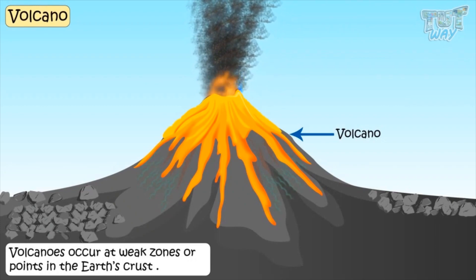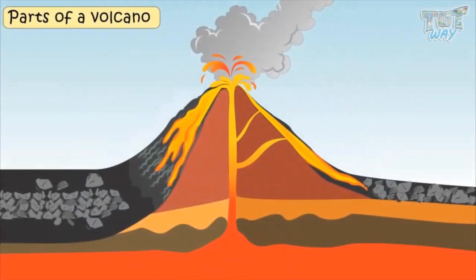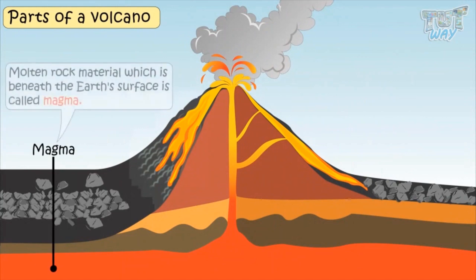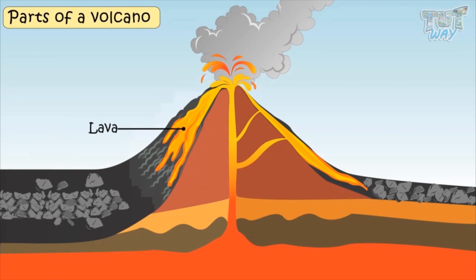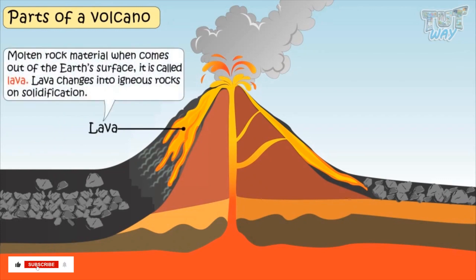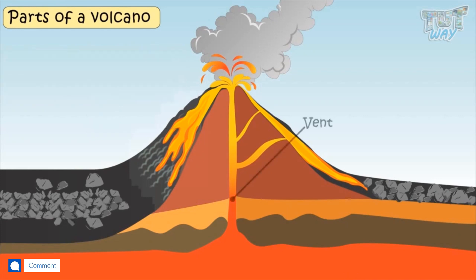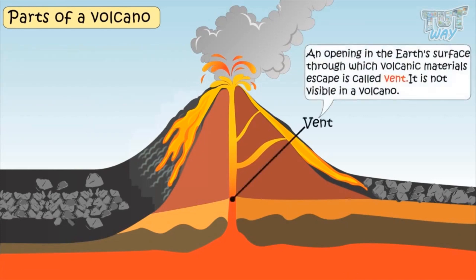Now let's learn about the various parts of volcanoes. Magma is molten rock material which is beneath the earth's surface. Lava is molten rock material when it comes out of the earth's surface, and on solidification, this lava turns into igneous rocks. A vent is an opening in the earth's surface through which volcanic materials escape, and the vent is not visible in a volcano.